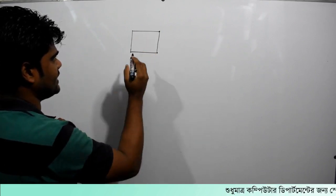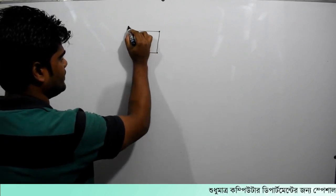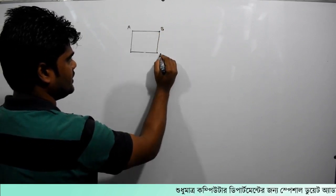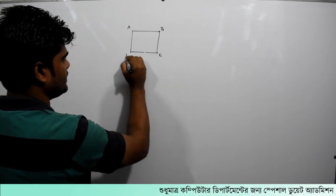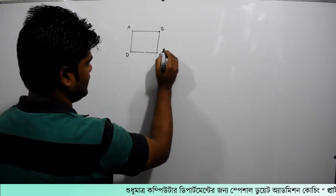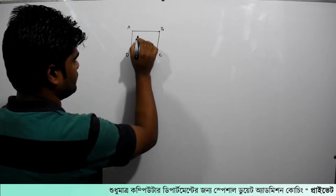This is the category of the name of the first. We will name A, B, C, D. We will name A, B, C.